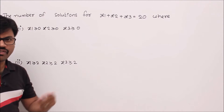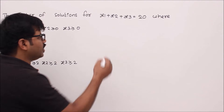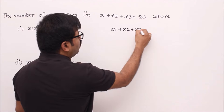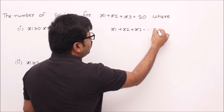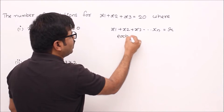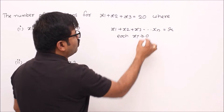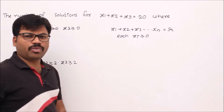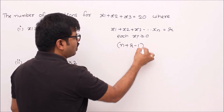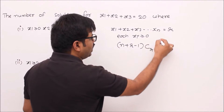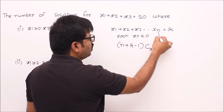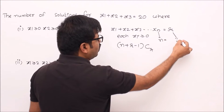We have a direct formula for it. If you have x1 plus x2 plus x3 ... xn equal to r, where each xi is greater than or equal to 0, then the number of solutions is n plus r minus 1 choose r, where n is the number of variables and r is the sum.